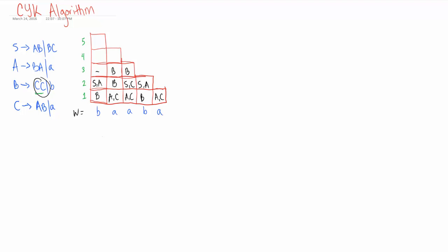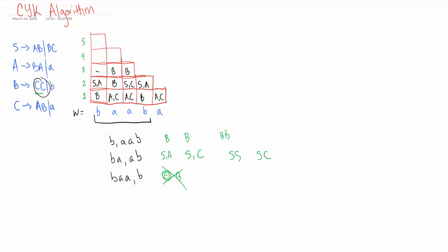Now it's getting to my least favorite part where we start doing four letters. For substring BAAB: B is just B, and AAB we already did — that's B. BA is SA, and AB is SC. Then BAA is B, but AB has nothing — that cell is blank — so we can cancel that one out. The Cartesian product gives us BB, SS, SC, AS, and AC. None of these are in our grammar, so we just put a dash.